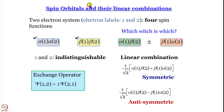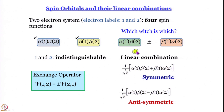For two-electron systems we have learned that we can have four spin functions: alpha(1)alpha(2), beta(1)beta(2). But we cannot have alpha(1)beta(2) and beta(1)alpha(2) by themselves, because we cannot distinguish between electron number 1 and electron number 2. We cannot say for sure which electron has alpha spin and which has beta spin. So the best we can do is take linear combinations, and a linear combination connecting the two terms by a minus sign is equally acceptable. The wave function with a plus sign is symmetric with respect to exchange; the wave function with a minus sign is antisymmetric with respect to exchange.